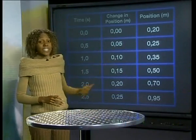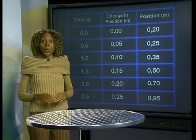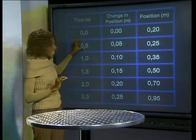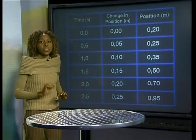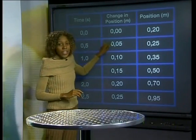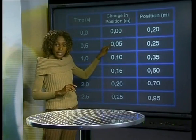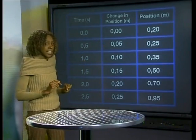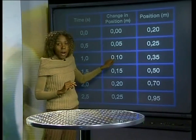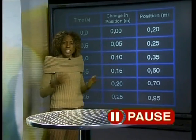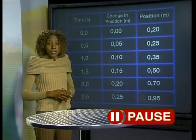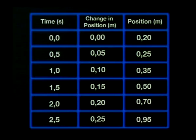Here is the completed table of results for the trolley going downhill. In the first half second, the trolley changed position by 0.05 meters. In the next time interval, the trolley was displaced by 0.1 meters. What is happening to the displacement of the trolley for each of the time intervals? Clearly, the change in position is increasing.